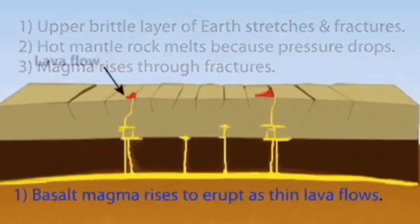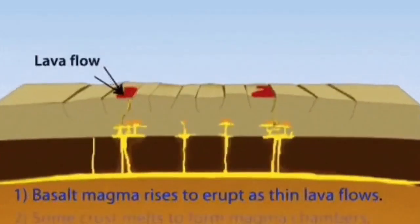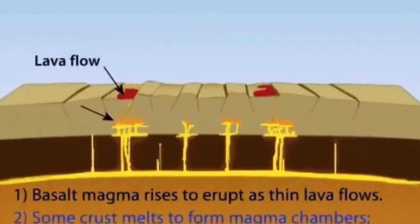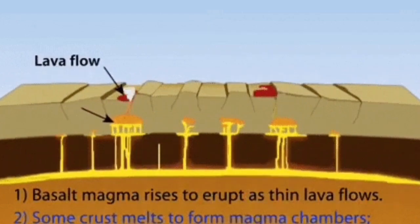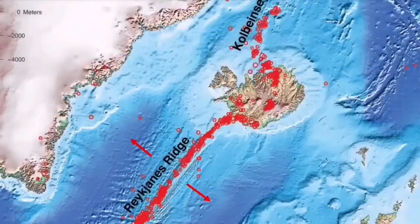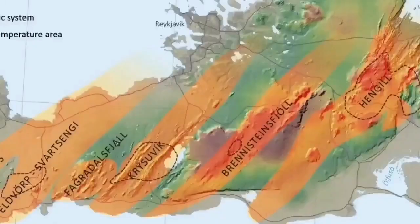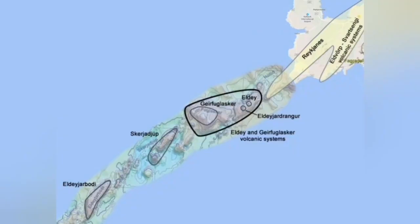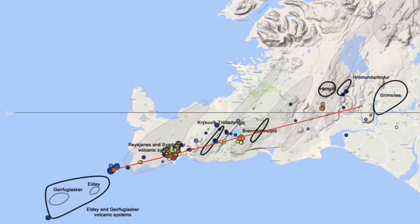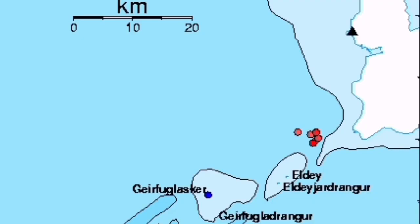In the Red Sea we have another example — the Afar Triangle — and in Africa or the Rhine Valley in Germany we have that too. These eruptions happen in the water most of the time, like what we have in the Reykjanes Ridge, which is a plateau inside the Atlantic Ocean. Part of it reaches the land.